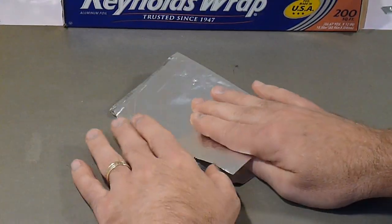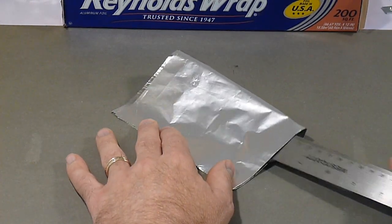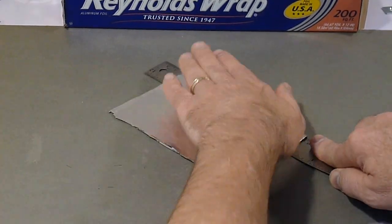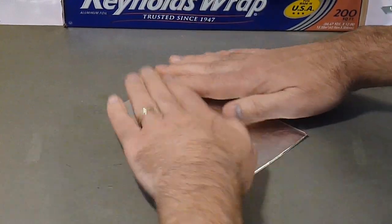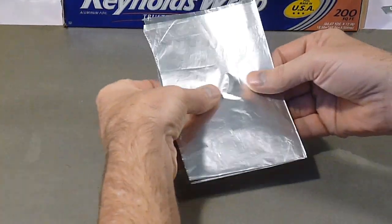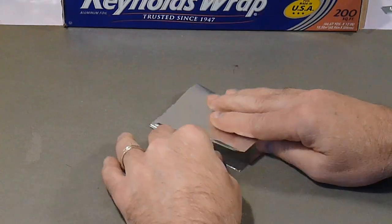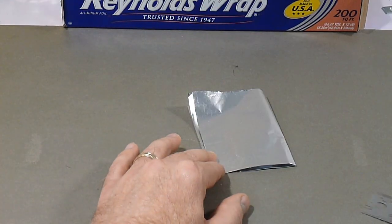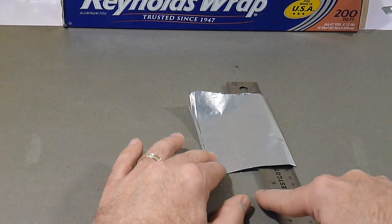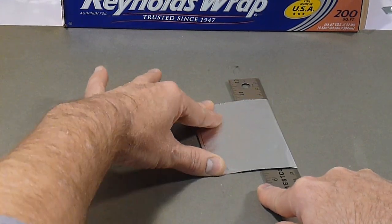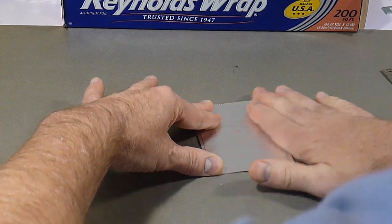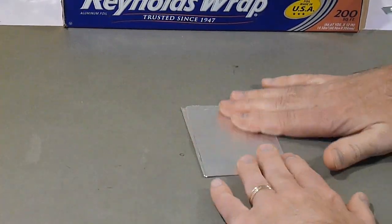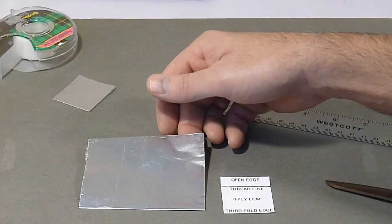Fold it once again, careful to line up the previous folded edge with itself. Smooth out any wrinkles. Do this a second time for the other piece of aluminum foil.